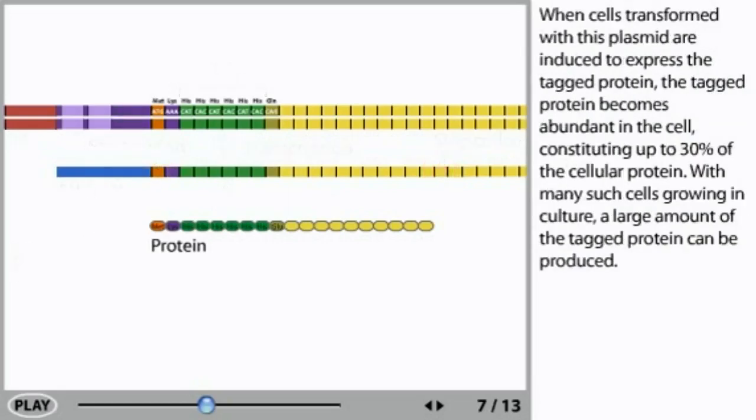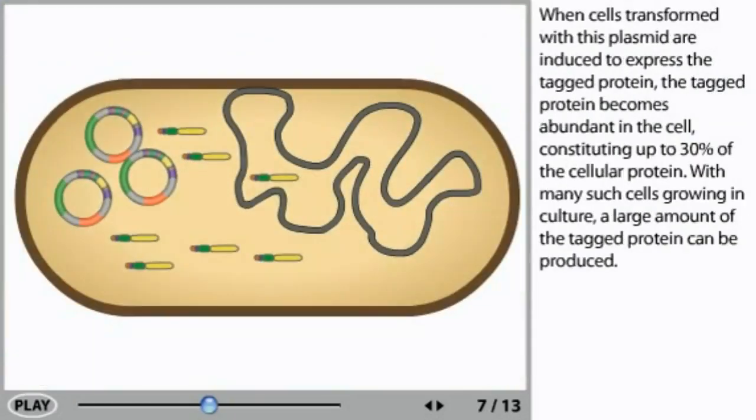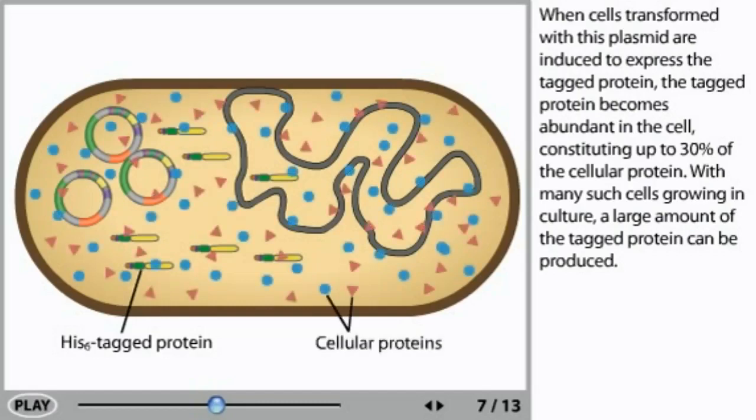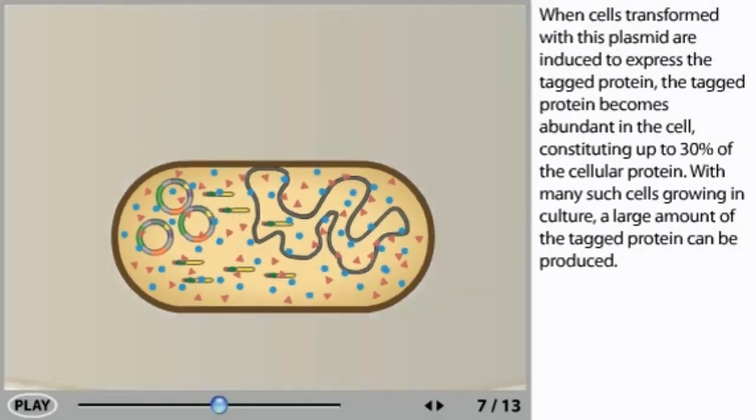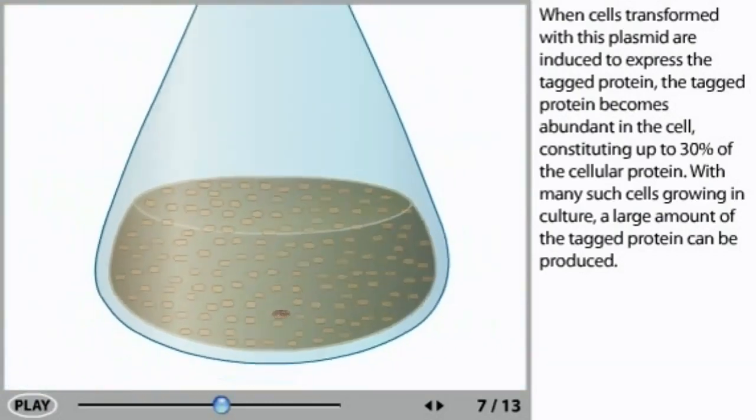When cells transformed with this plasmid are induced to express the tagged protein, the tagged protein becomes abundant in the cell, constituting up to 30% of the cellular protein. With many such cells growing in culture, a large amount of the tagged protein can be produced.